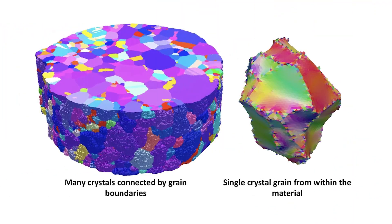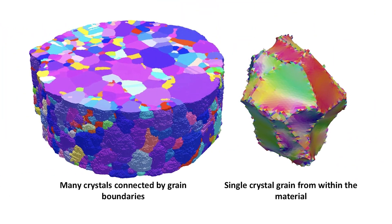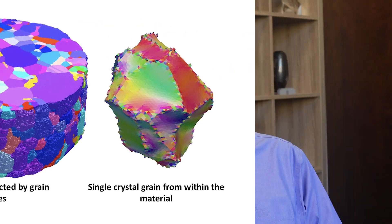Our group studies polycrystalline materials. Almost all solid materials that you use are actually made of small microscopic crystals that are all bound together at grain boundaries within the material. The ways the grain boundaries are fixed in place affect the properties of the material — this could be the strength of the material, its electrical properties, its optical properties. The positions of these grain boundaries and the way they're arranged are important for the properties of the material.